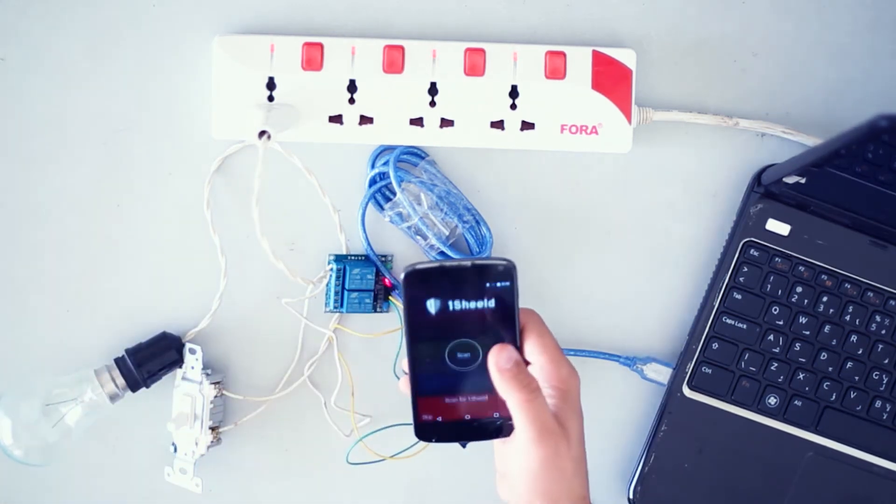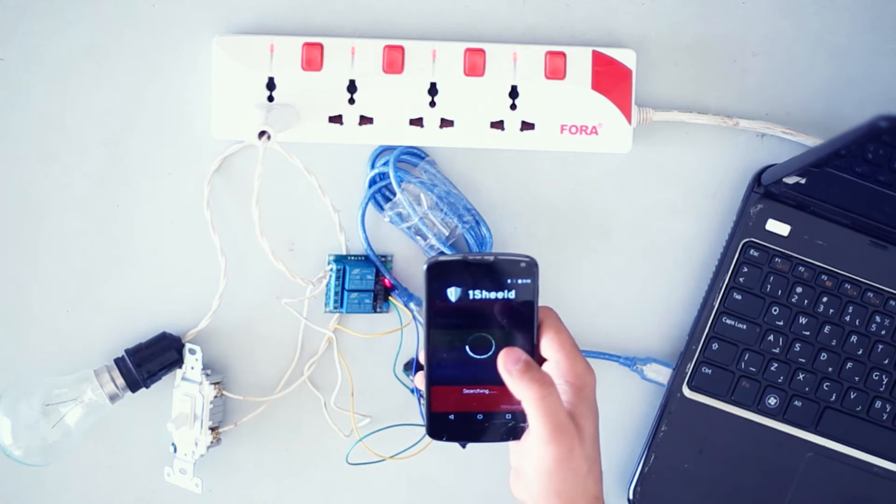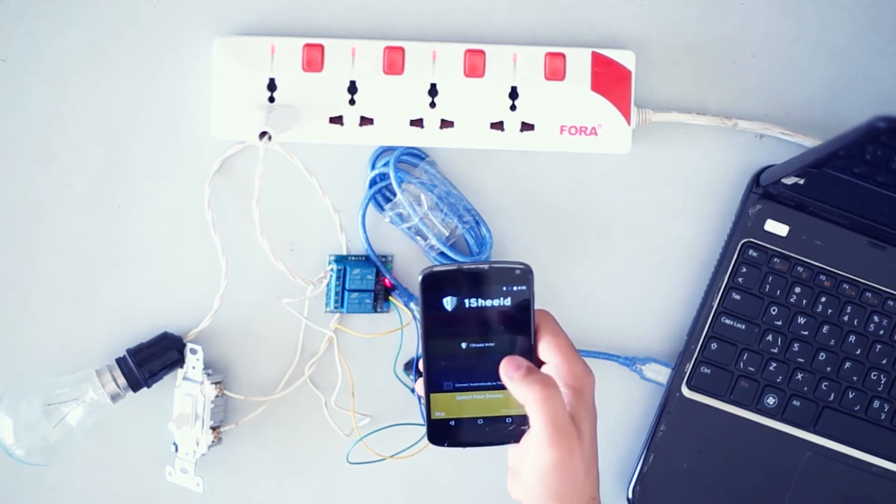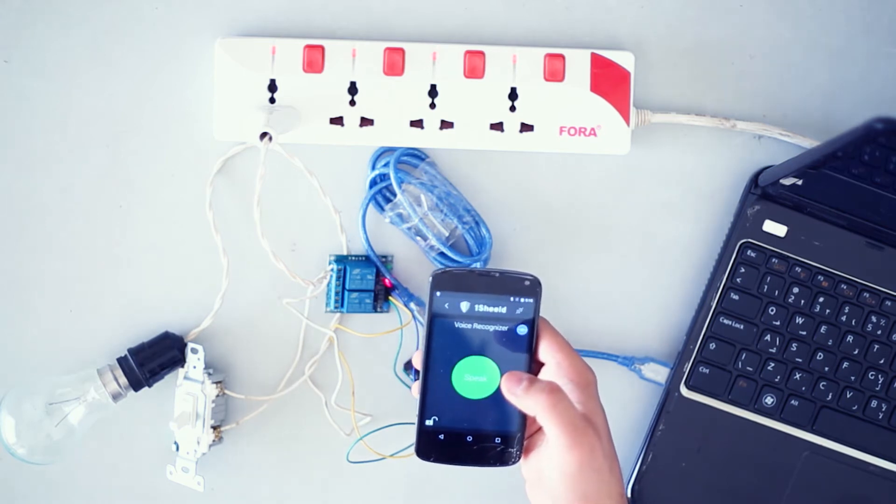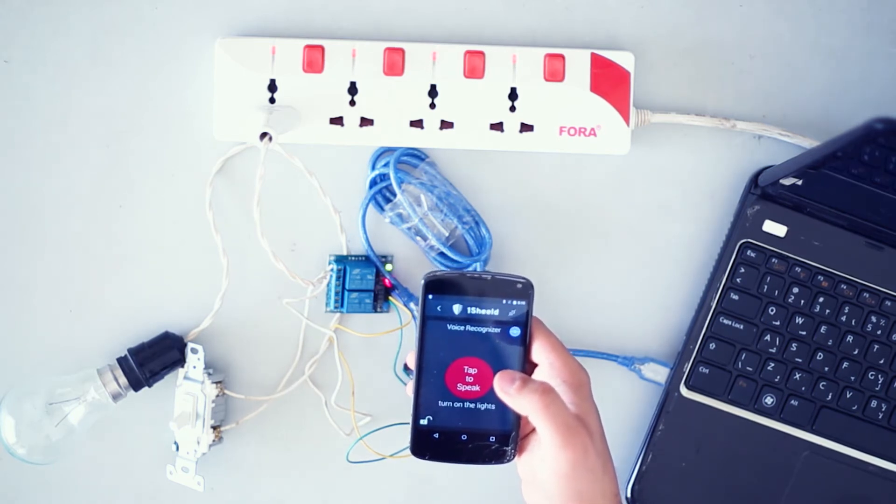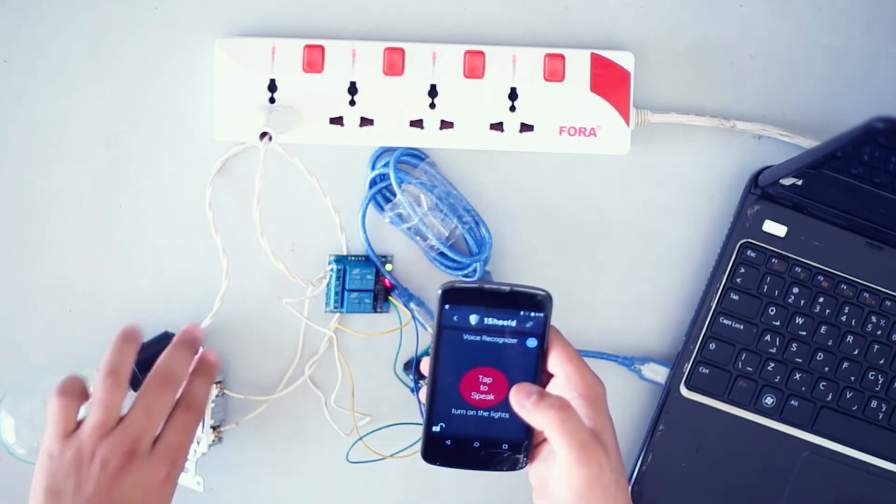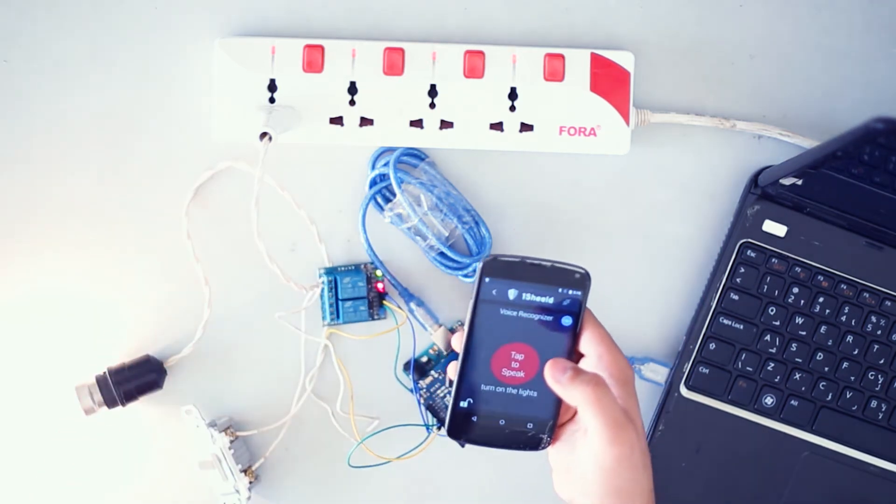Open the app, connect, then open the voice recognition shield and let's test. Turn on the lights. Oops, I forgot to power on. Okay, let's test again.